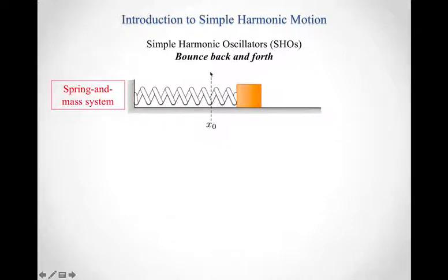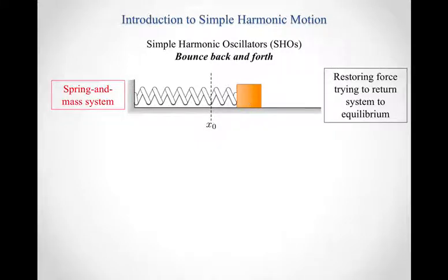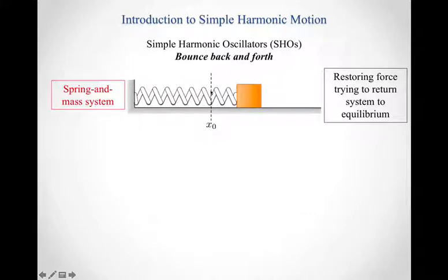Notice what we have here is a line telling us what the equilibrium position is for our system. The equilibrium position defines where this spring and mass system wants to be if you let it come to rest. But we've pulled it away from equilibrium, and in doing that there happens to be a restoring force acting on the spring and mass system that's trying to return it to equilibrium. So in pulling my mass over to the right, there's now a force pulling the mass back to the left, trying to get it back to equilibrium. As it bounces back and forth, that mass is going to continue to try to bring the system to equilibrium. That's the first type of simple harmonic oscillator — one that bounces back and forth.